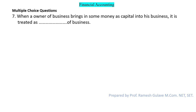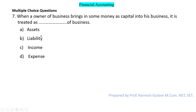The next question says: when an owner of a business brings in some money as capital into his business, it is treated as dash of the business. When an owner brings in money as capital, it is treated as a liability of the business. So option B is the right answer.